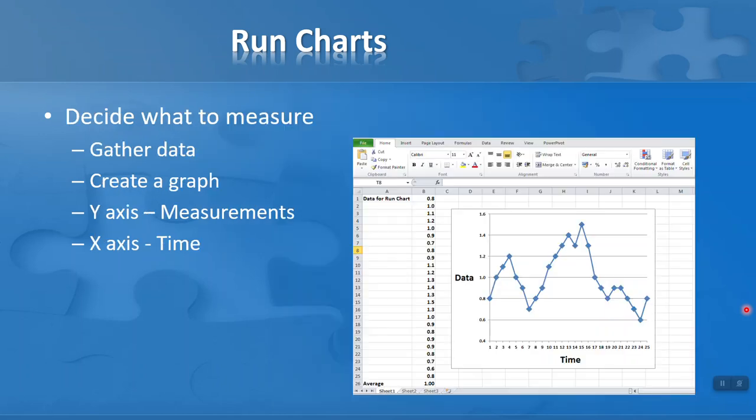Now let's develop this a little bit more. We first have to decide what it is we're going to measure. We gather data, create the graph, and as I said, on the y-axis we put our measurements and on the x-axis we put the time measurements. It makes more sense and is much more readable with time on the x-axis across the bottom.